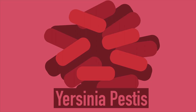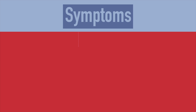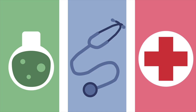Those infected by Yersinia pestis suffered from chronic pain, fever, headache, chills, abdominal pains, and swollen lymph nodes. Other side effects include delusions, nightmares, and comas. The plague could also kill you within 24 hours of infecting you, so safe to say it wasn't a pleasant experience. Those infected by the plague had three options.